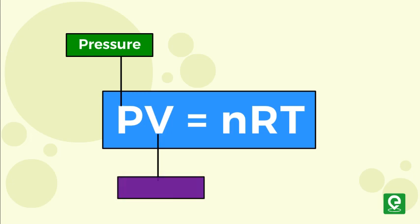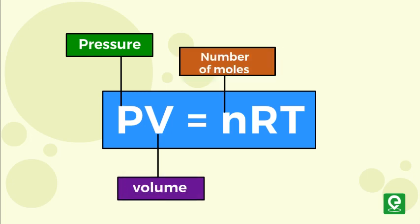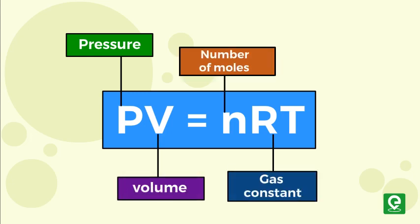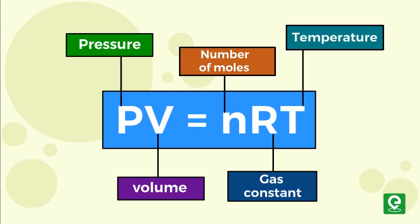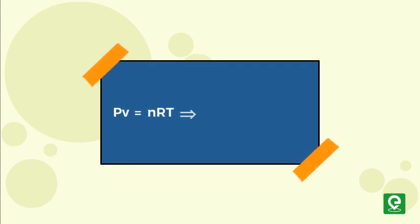Mathematically, it is expressed as PV equal to nRT, where P is pressure, V is volume, n is number of moles, R is the gas constant, and T stands for temperature.